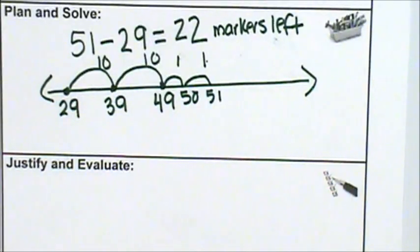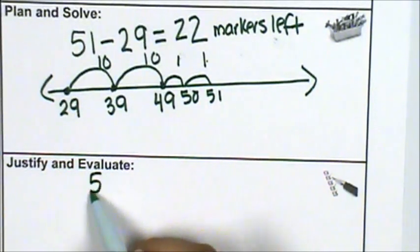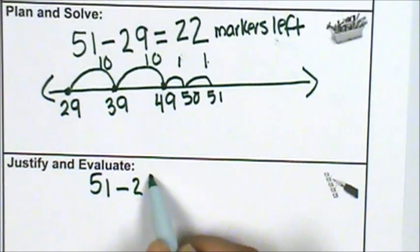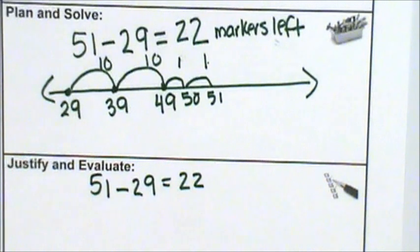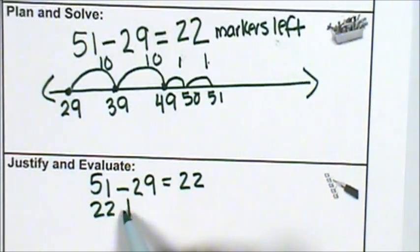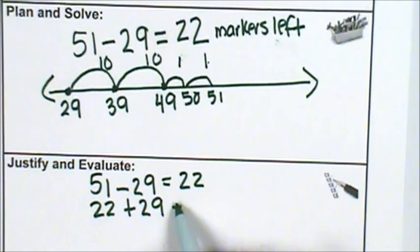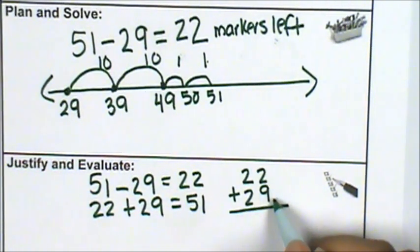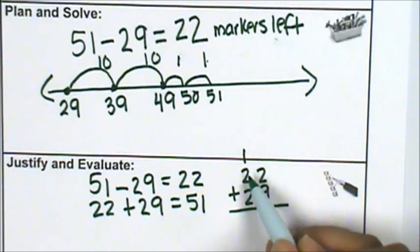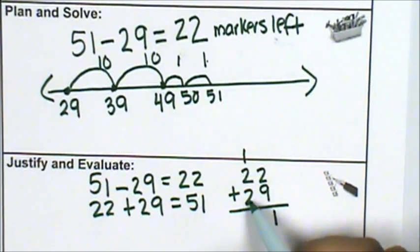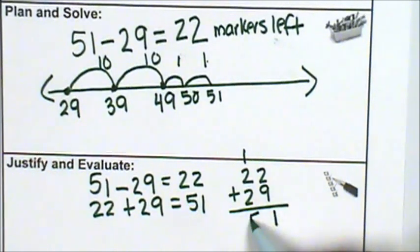Let me check my work. 51 minus 29 equals 22. So that means 22 plus 29 equals 51. Two ones and nine ones is 11 ones, or one one and one ten. One ten plus two tens plus two tens is five tens.